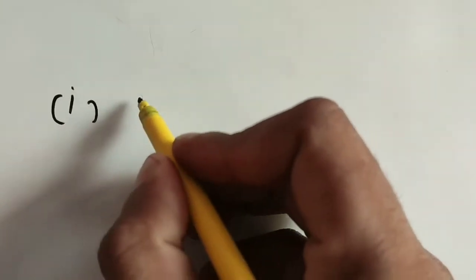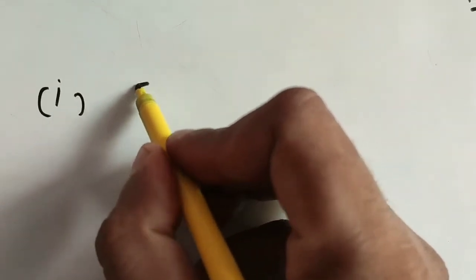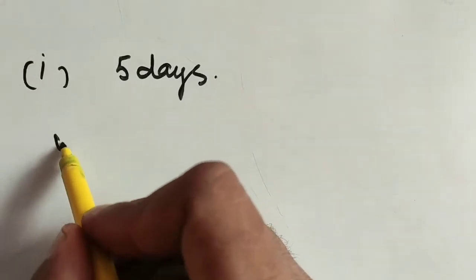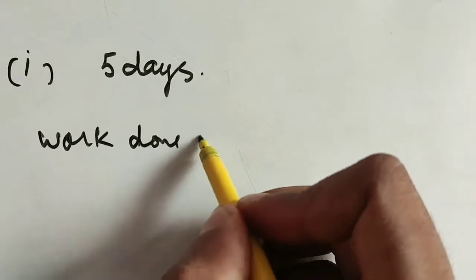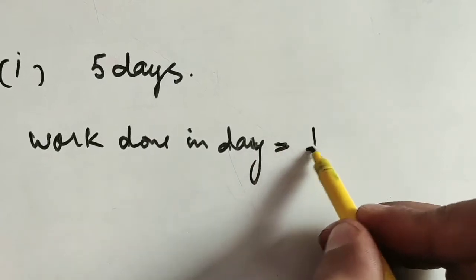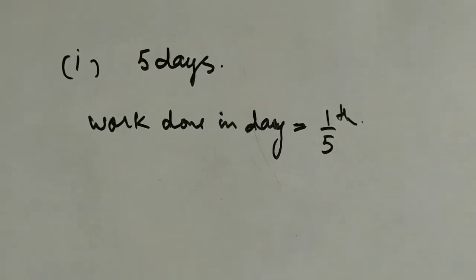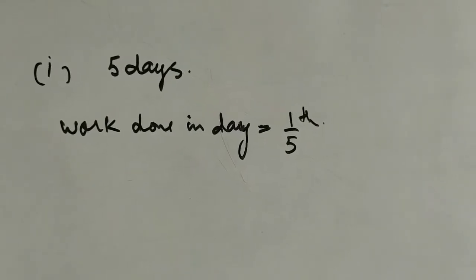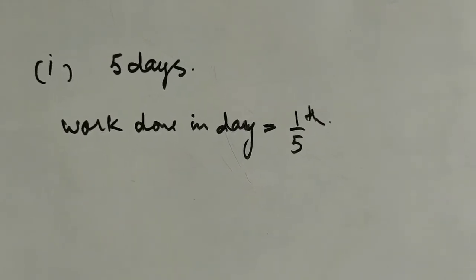The first thing is: if we have the total number of days — suppose a person A can complete a work in 5 days — it means the work done in 1 day will be 1/5th. He has done 1/5th of the work per day, that's why after 5 days it gets completed.